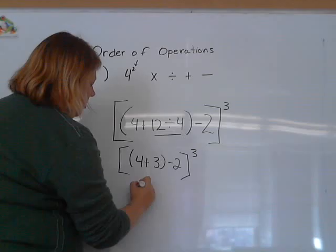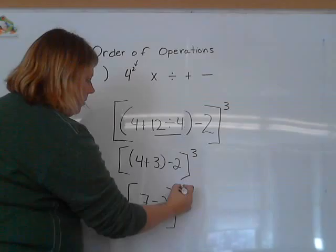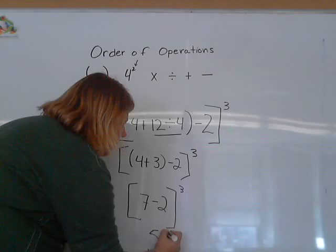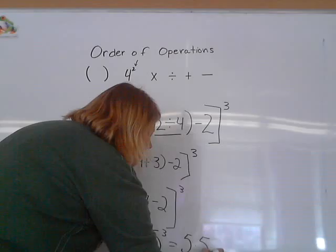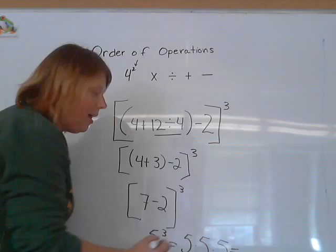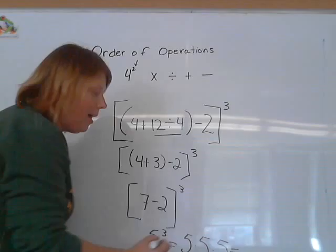Now we're going to do what's in the parenthesis. 7 minus 2. 7 minus 2 is 5 to the third power. Which equals 5 times 5 times 5, which equals 125. So that's how you do the orders of operations.